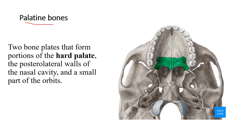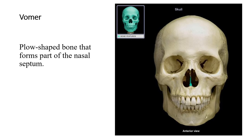The palatine bones are two bony plates that form portions of the hard palate — specifically the posterior portion of the hard palate. They also help to form the walls inside the nasal cavity. The vomer is a plow-shaped bone that forms part of the nasal septum. It meets the perpendicular plate of the ethmoid bone superiorly.